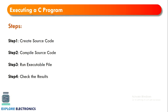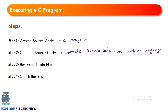With this understanding, let's see the steps involved in executing a C program. The first step is to create a source code, which is nothing but writing the C program. Once we write the C program, the compiler converts the source code into machine language — this is the second step. The compiler then creates an executable file, and we can run this exe. The computer processes the data based on the commands given in the program, and finally generates results according to the code.